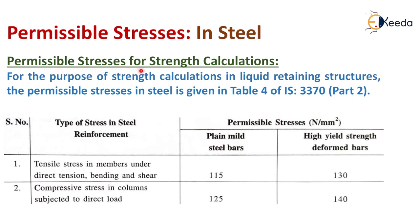For permissible stresses for strength calculation in steel: for the purpose of strength calculation in liquid retaining structures, the permissible stresses in steel are given in table 4 of IS 3370 part 2. This is the table used for this purpose.